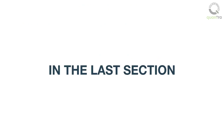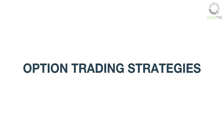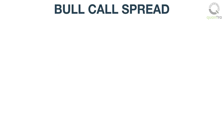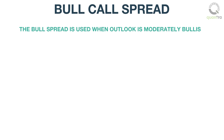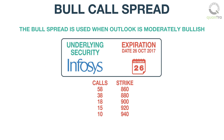In the last section of this course, we introduced the option trading strategies. The first strategy we learned was the bull call spread. The bull call spread is used when the outlook is moderately bullish. The strategy involves simultaneously buying call options at a specific strike price and selling the call option with a higher strike on the same underlying security.